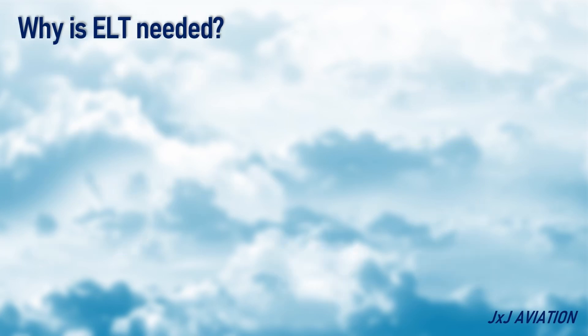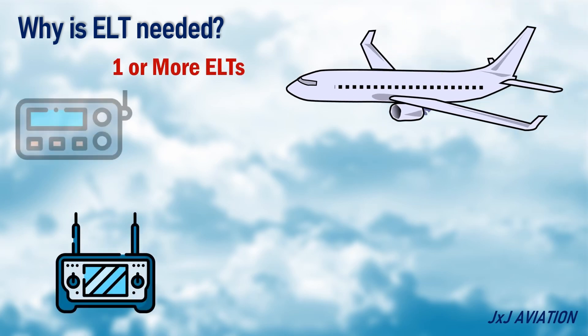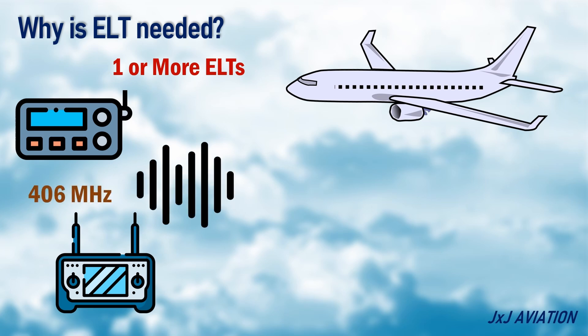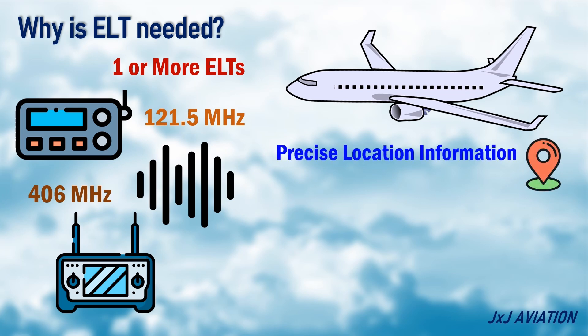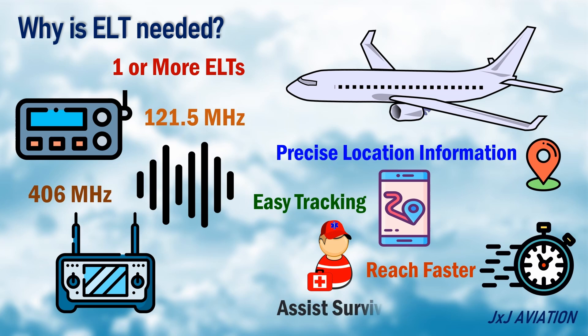Most modern aircraft have one or multiple ELTs. Modern ELTs transmit distress signals on 406 MHz frequency, while older ELTs operated on 121.5 MHz frequency. Modern ELTs send precise location information, which means tracking the crashed aircraft becomes easier, and search and rescue teams can reach that location faster and assist survivors.